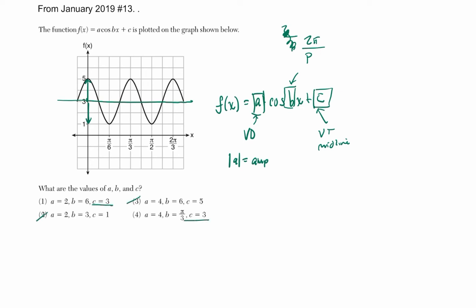And then the amplitude is 2. So the A value has to be either positive 2 or negative 2. But they only give us one choice that fits, and that's choice 1.